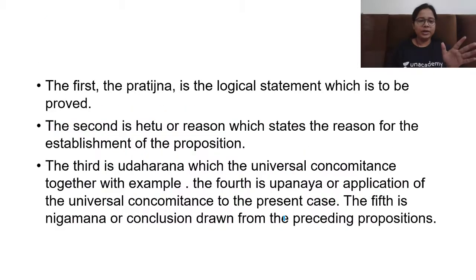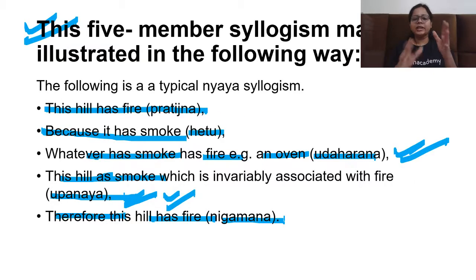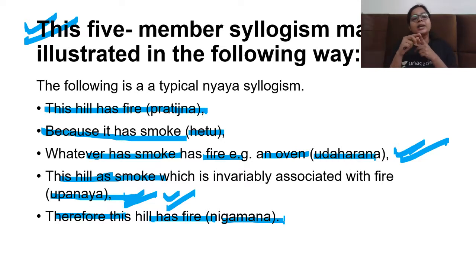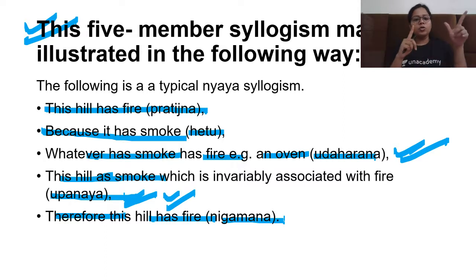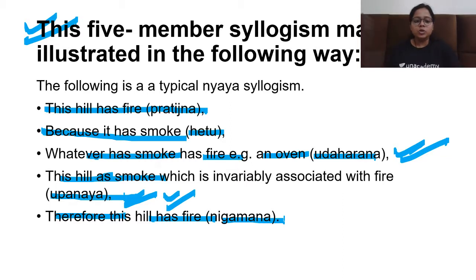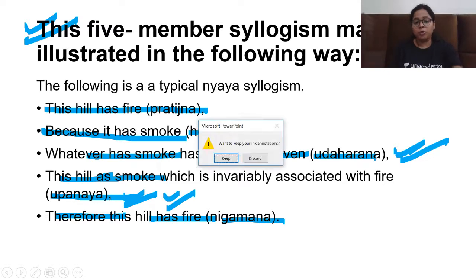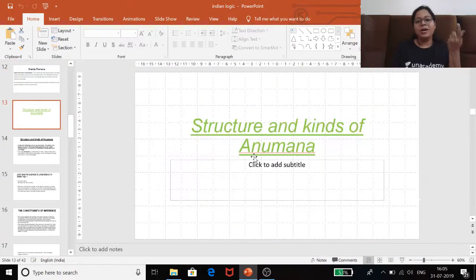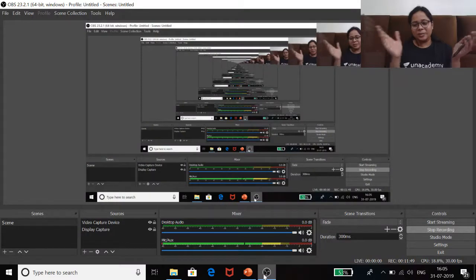So to recap: we have one proposition — the hill has fire. Then the reason — because there is smoke. Then we remember our past experience that wherever there is smoke, there is fire. Then we apply that universal relationship, and finally we conclude: therefore the hill has fire. That is nigamana. With this we complete the topic of anumana. Please subscribe to the channel if you haven't, and like the video. Thank you.